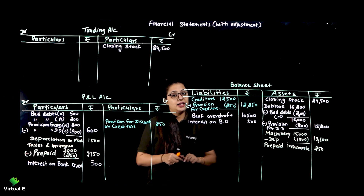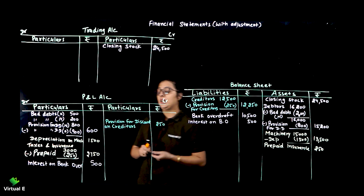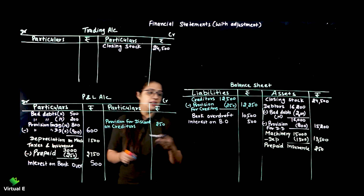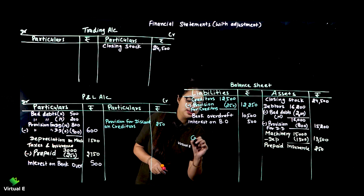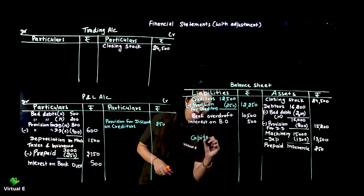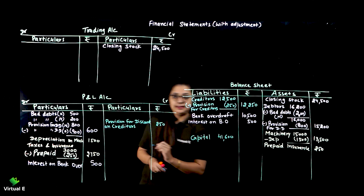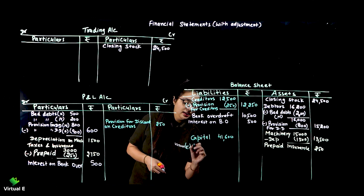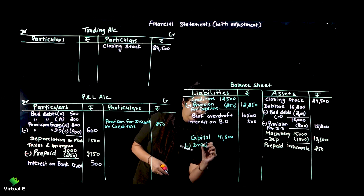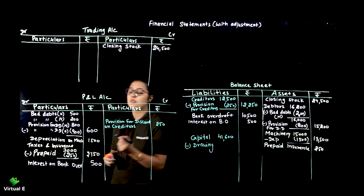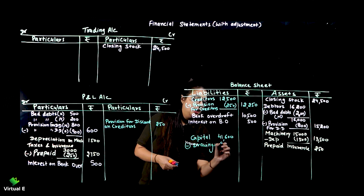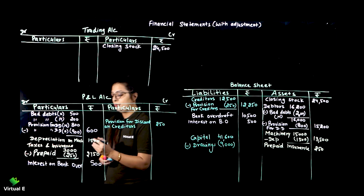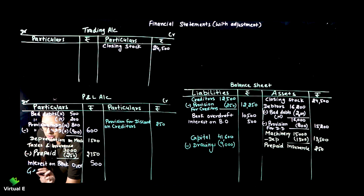All our adjustments are done. Now we transfer all the amounts. First: capital goes to liability - capital 41,600, easy. Keep doing all things, practice is why we understand. Drawings is given 9,000 - we will minus it from capital. Next, general expenses go to profit and loss.